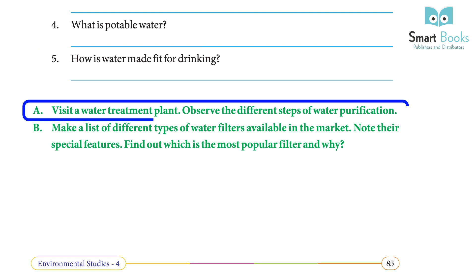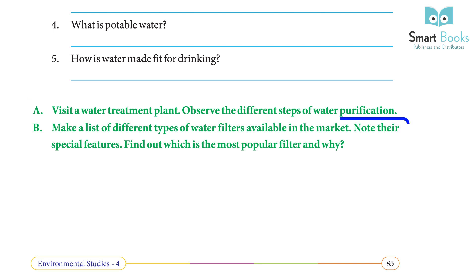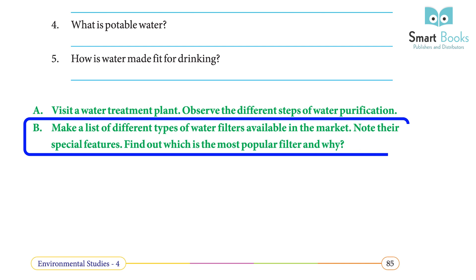Activity: Visit a water treatment plant and observe the different steps of water purification. Make a list of different types of water filters available in the market, note their special features, and find out which is the most popular filter and why.